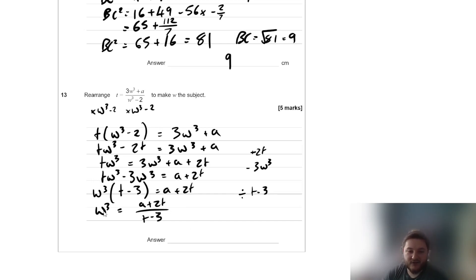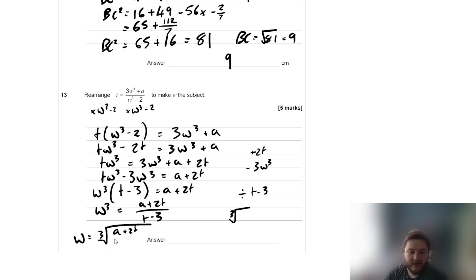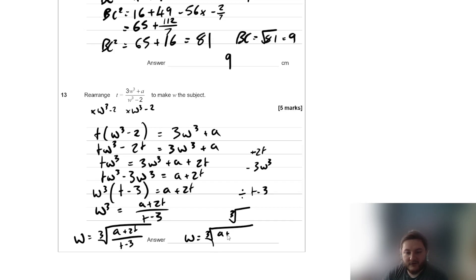Divide both sides by (t − 3): w³ equals (a + 2t) over (t − 3). Then cube root both sides: w equals the cube root of (a + 2t) over (t − 3). That's the final answer.